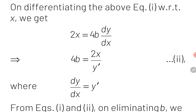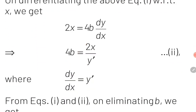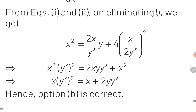From this equation we get the value of b: b = x/(2y'). Once we obtain the value of b, we substitute this into the first equation x² = 4by + 4b². After substitution, the equation becomes x² = (2x/y')·y + 4·(x/(2y'))². On solving this, we obtain the final answer: x·(y')² = x + 2y·y'. This is our final answer.